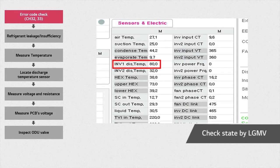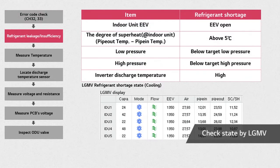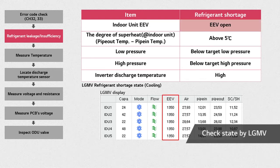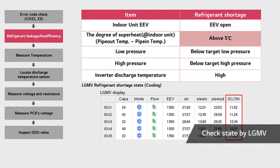Check the discharge temperature using the data from LGMB. To solve this problem, start by checking if the refrigerant is insufficient using LGMB. Through LGMB, you can also check the cycle. You can tell that the refrigerant amount is insufficient when the indoor unit EEV is fully open and the degree of superheat at the indoor unit is above 5 degrees.